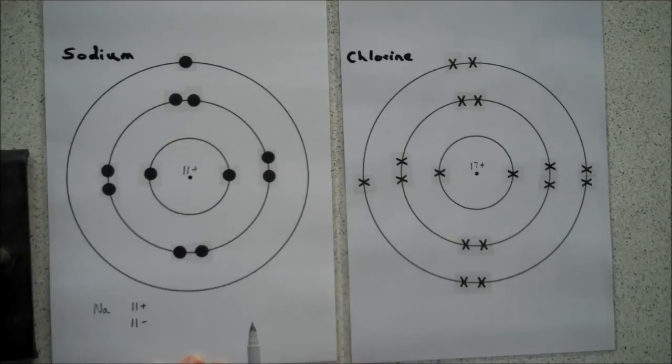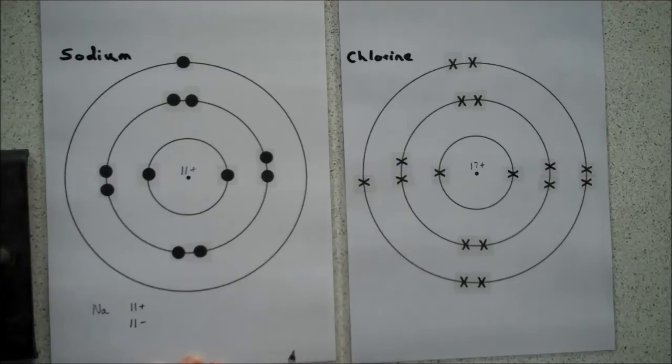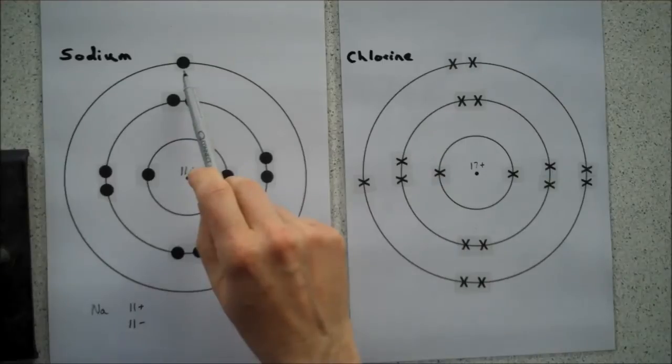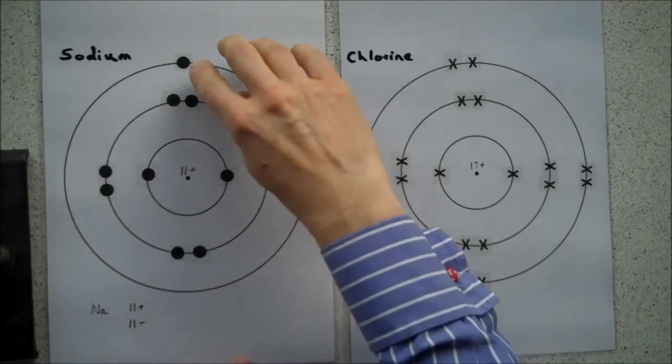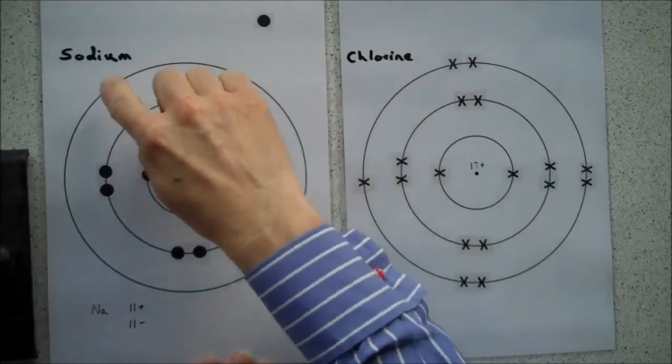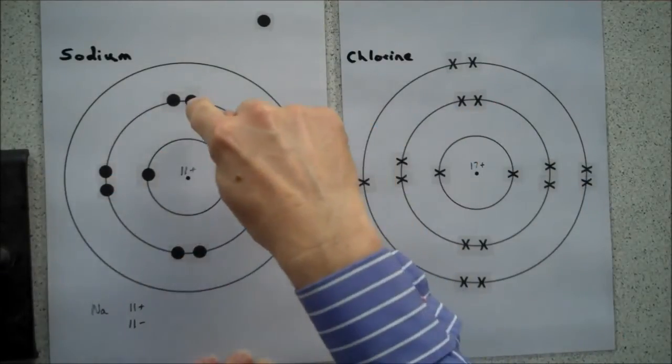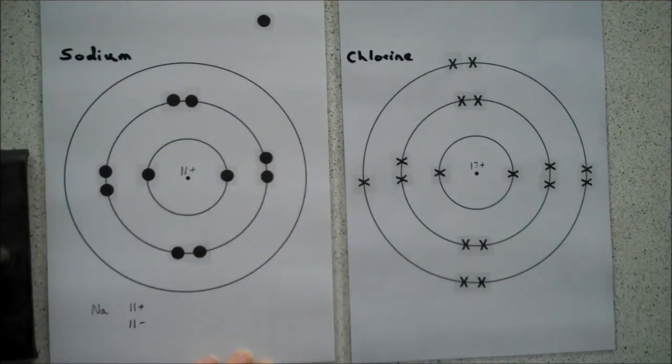Now, to form a stable substance, the sodium has got to lose that one electron. If it loses that electron, that shell is now non-existent. It's empty. There's nothing there. So the previous shell is a full outer shell, and that makes the sodium stable.